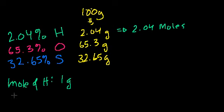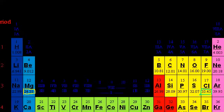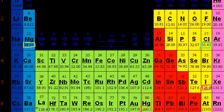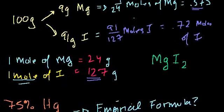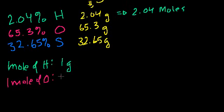And then oxygen, 1 mole of oxygen. Oxygen's mass number, in case you forgot, is 16, right there. So 1 mole of oxygen has a mass of 16 grams. 6.02 times 10 to the 23 oxygen atoms has a mass of 16 grams. So how many moles do we have here?